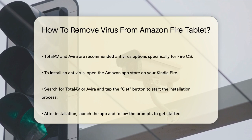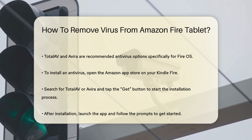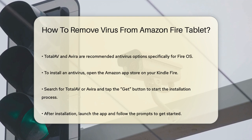Let's start with the installation process. Open the Amazon App Store on your Kindle Fire. Search for TotalAV or Avira. Select the app and tap the Get button to install it. Once installed, launch the app and follow the prompts to get started.